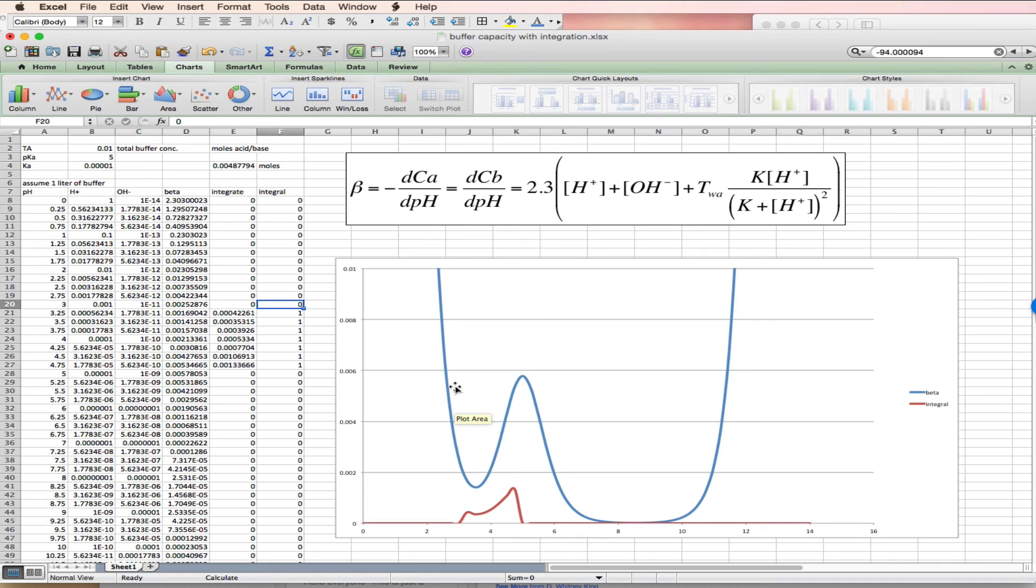And now the amount of acid I need to increase the pH goes up because I'm working up this curve. So if I'm at pH 5 and I want to take the pH down to 2.75, I need to add 0.0065 moles of acid.